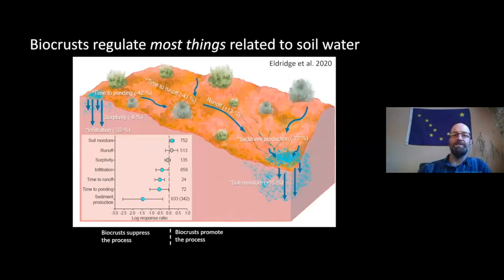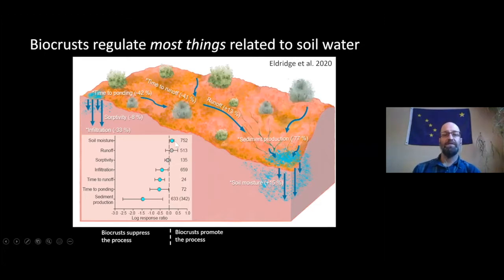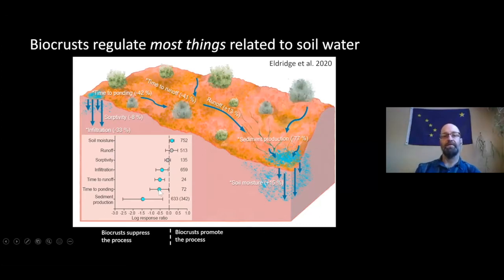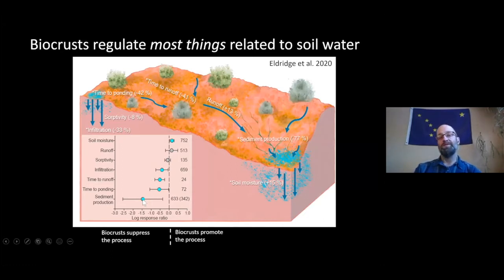What we can conclude from this study is that bio crusts regulate most things related to soil water. If you have more bio crusts, you tend to have more soil moisture. We didn't find much of an effect on runoff amount or sorptivity, but we did find that with more bio crusts, there's less infiltration and speedier time to runoff and to ponding — suggesting that overall, most studies around the world show bio crusts promoting runoff more than infiltration. The biggest effect of all was in sediment production: the presence of bio crust decreased sediment production, meaning a decrease in water erosion.